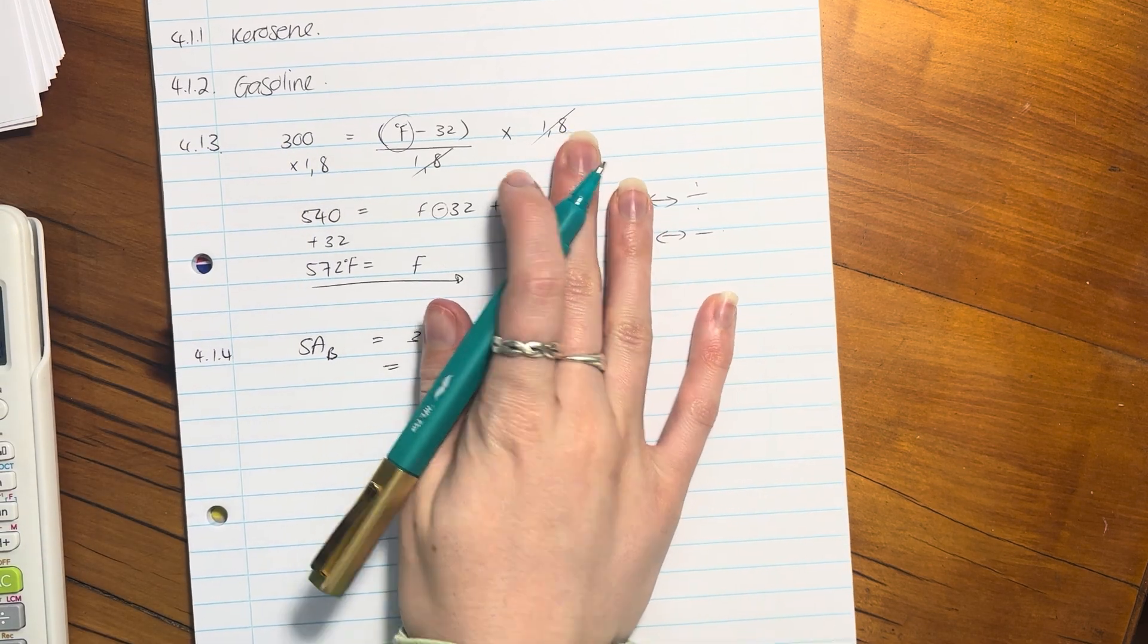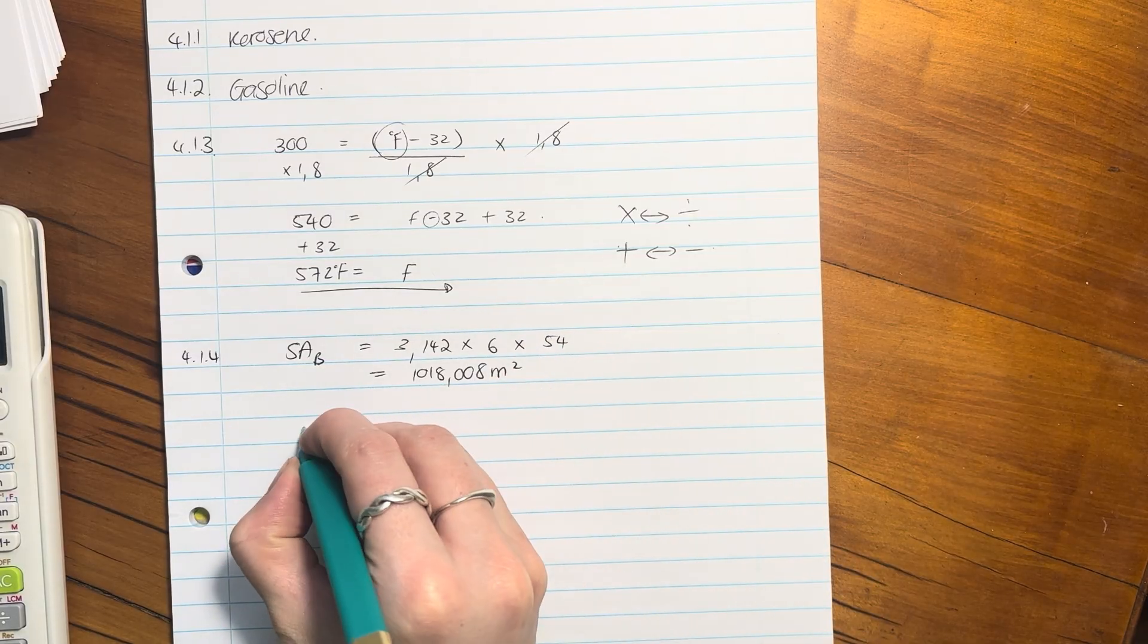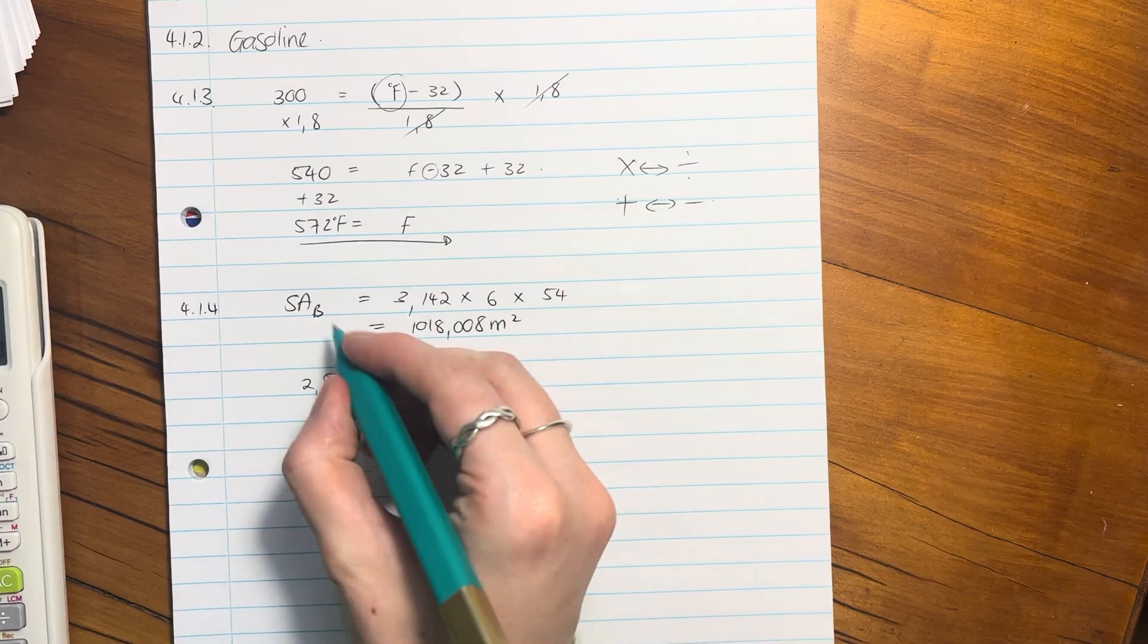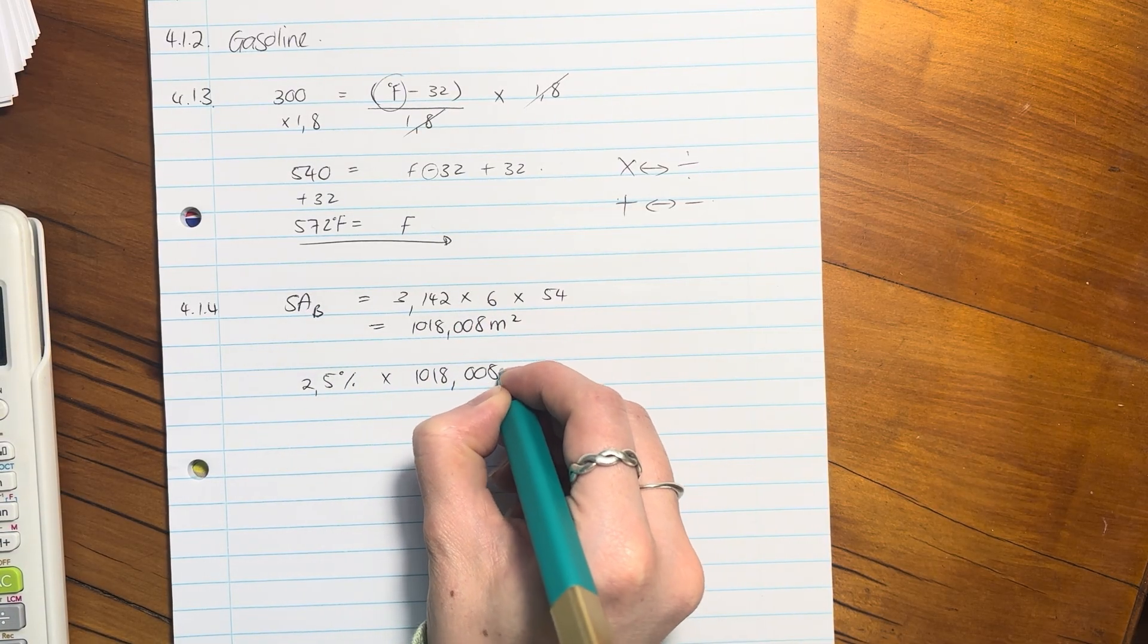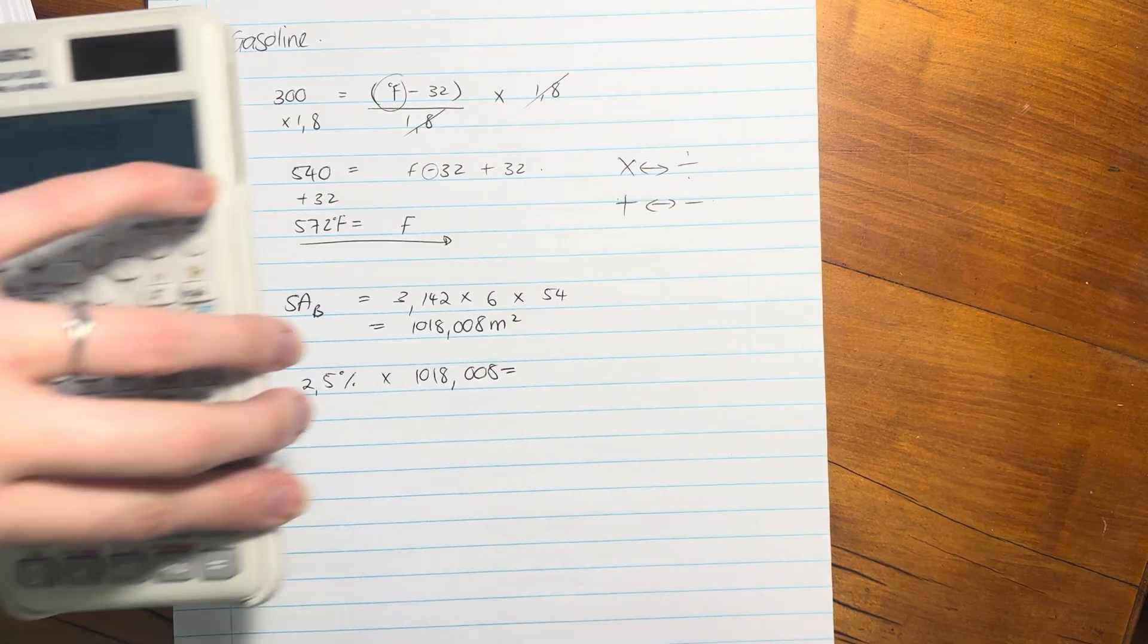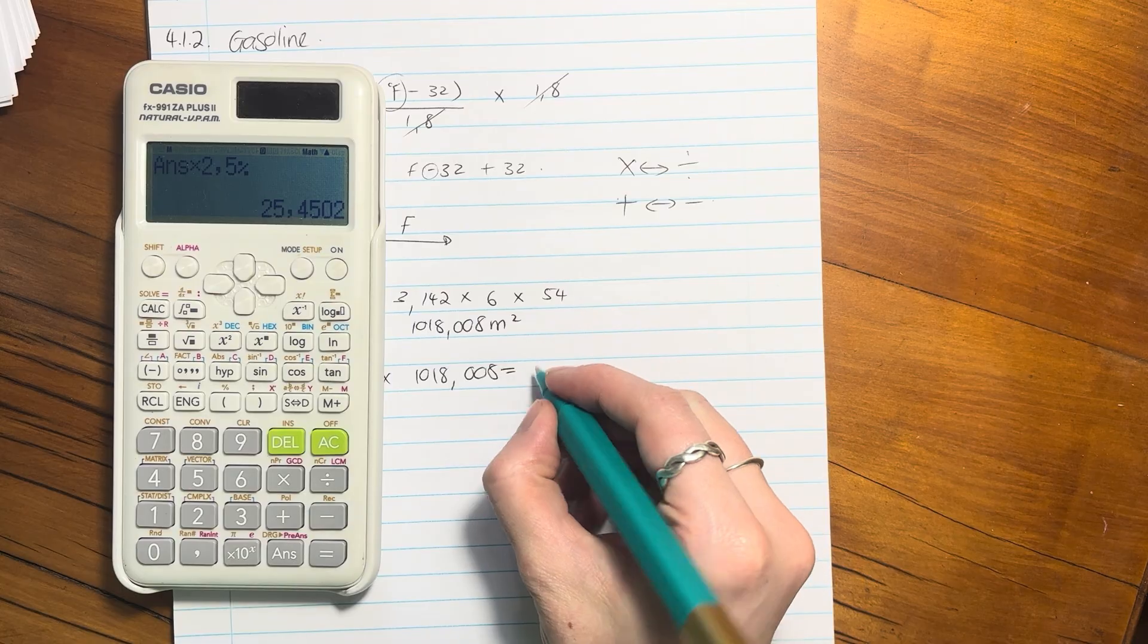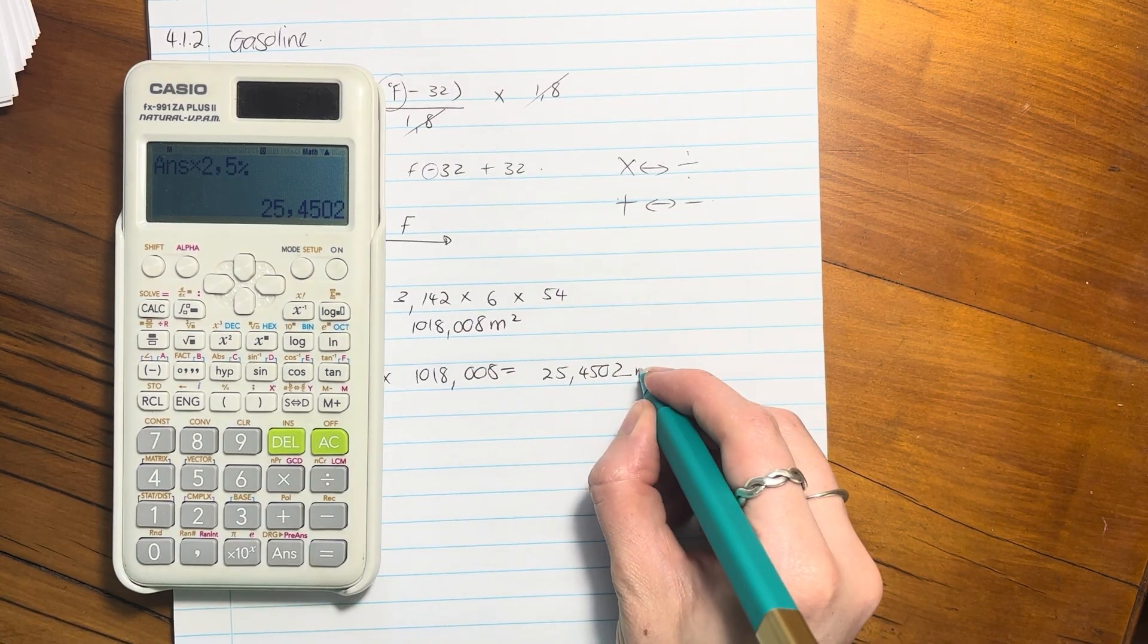But now we have to subtract off 2.5%. So what we're going to do is, what is 2.5%? Let me just make sure you can see here. What is the 2.5% of this number? You're just going to pop it in there. 2.5%, that's meters squared.